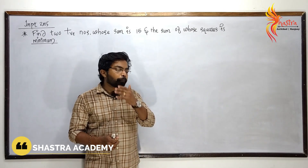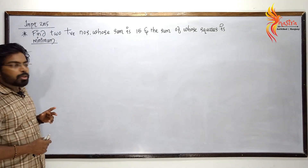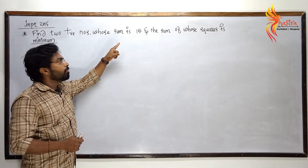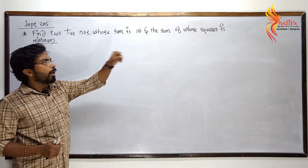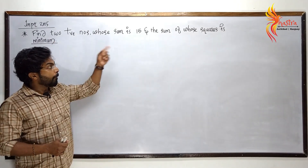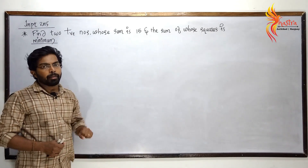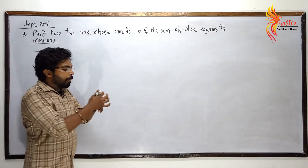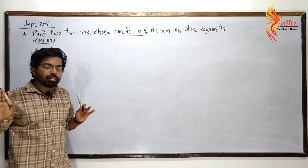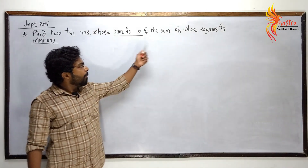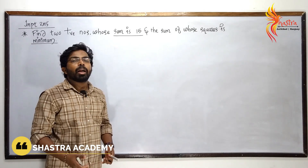Okay, I will show you the 3rd mode. This is a question. If you are asked to find two positive numbers whose sum is 15, and the sum of whose squares is minimum.